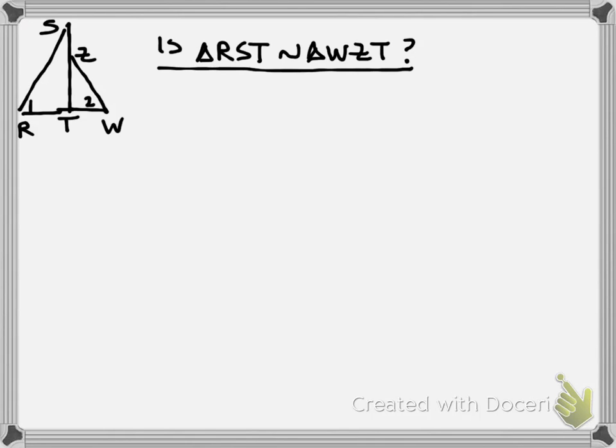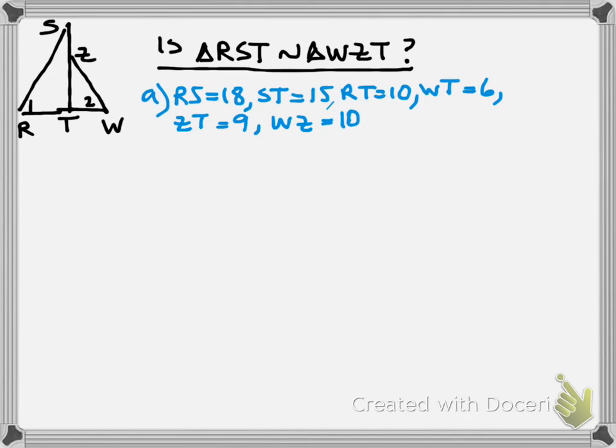So now I'm going to give you some information in part A. What if we know the length of RS is 18, the length of ST is 15, the length of RT is 10, the length of WT is 6, the length of ZT is 9, and the length of WZ is 10.8. Nice numbers and then you get that little guy. So what are they talking about with all that information? They're just talking about the sides. Which of our theorems or postulates would we potentially be using to try to prove that these triangles are similar? Side, side, side.